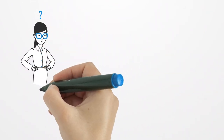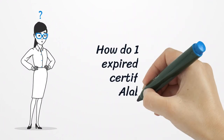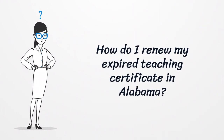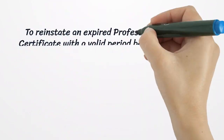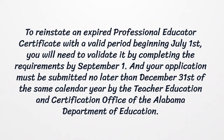How do I renew my expired teaching certificate in Alabama? To reinstate an expired professional educator certificate with a valid period beginning July 1st, you will need to validate it by completing the requirements by September 1st. Your application must be submitted no later than December 31st of the same calendar year by the Teacher Education and Certification Office of the Alabama Department of Education.